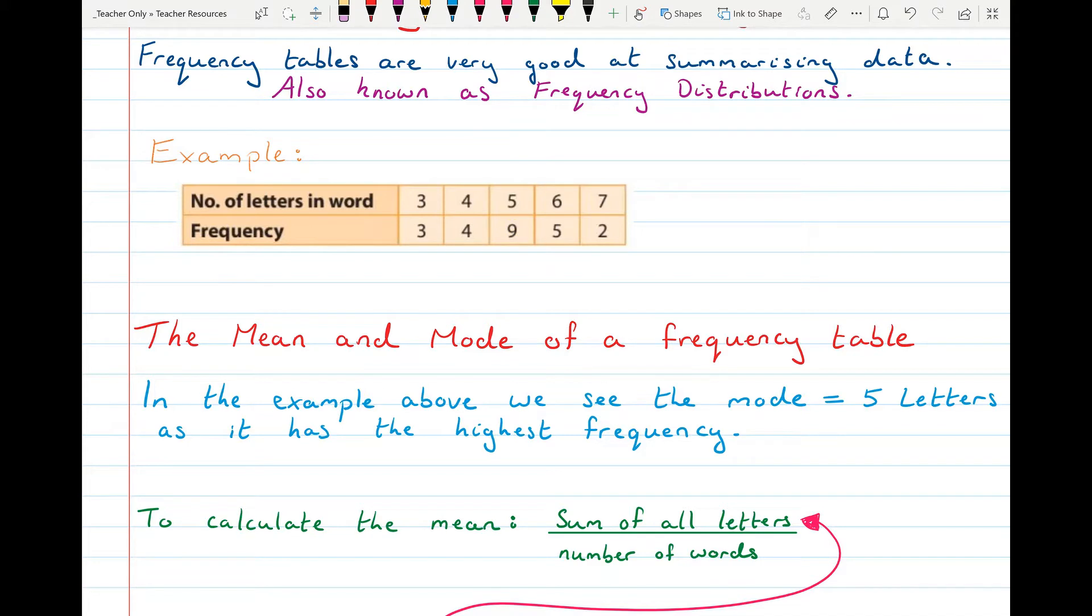And to find the mean then, well we need to add up all of the letters in the words and then divide by however many words there were.